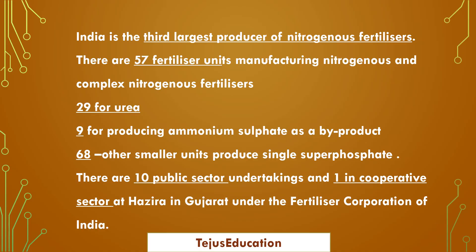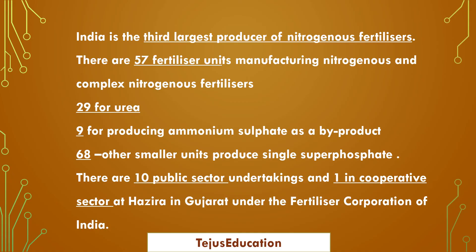Hazira is the place where a natural gas pipeline passes through. Natural gas is very important for producing fertilizers — it acts as a raw material for the production of fertilizer. So the industry is located in this particular area.